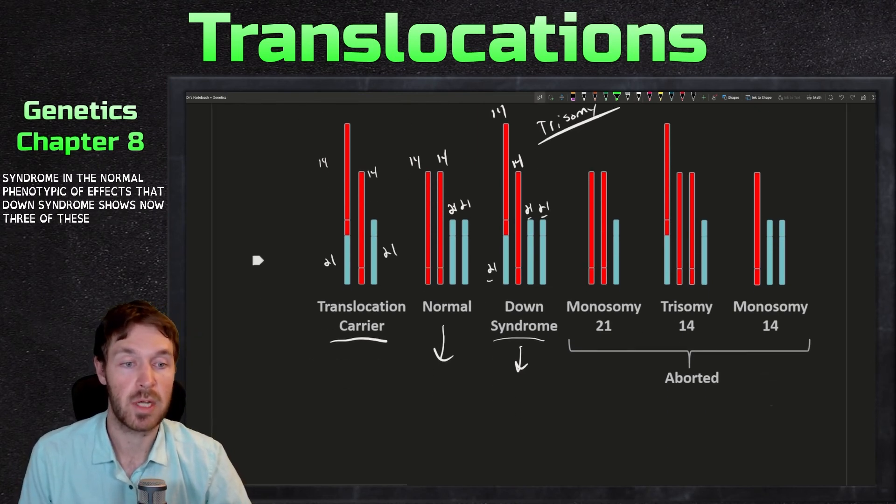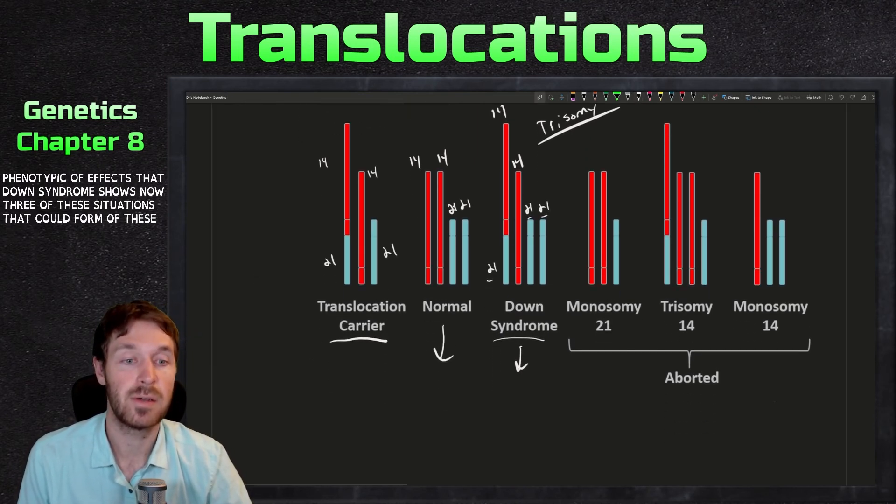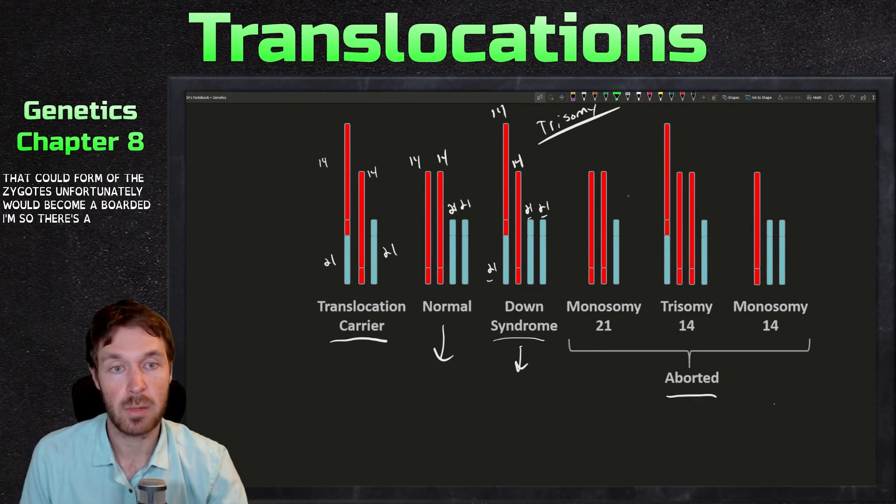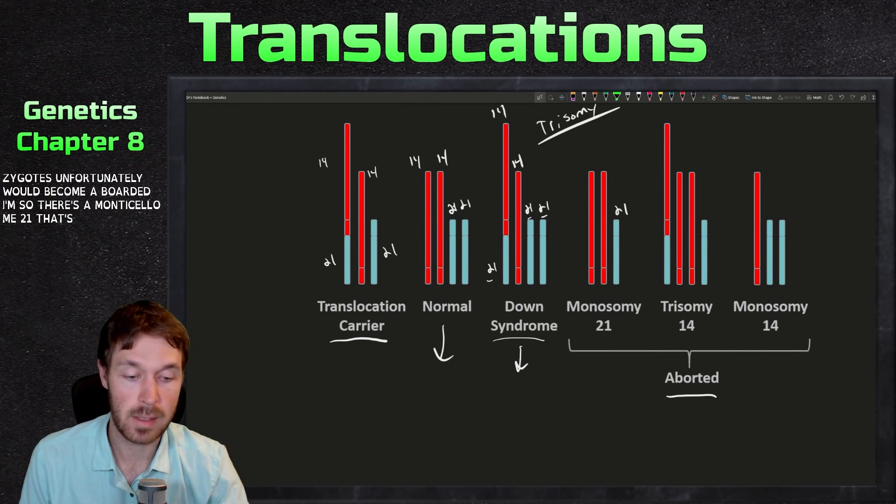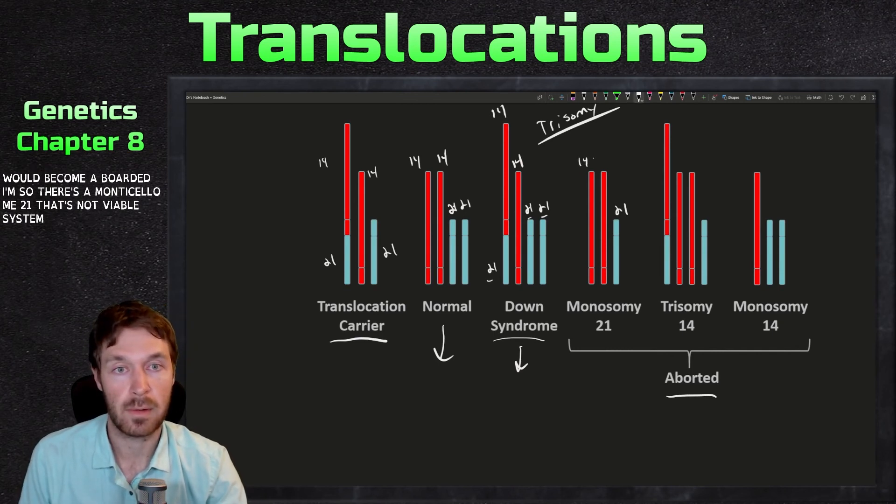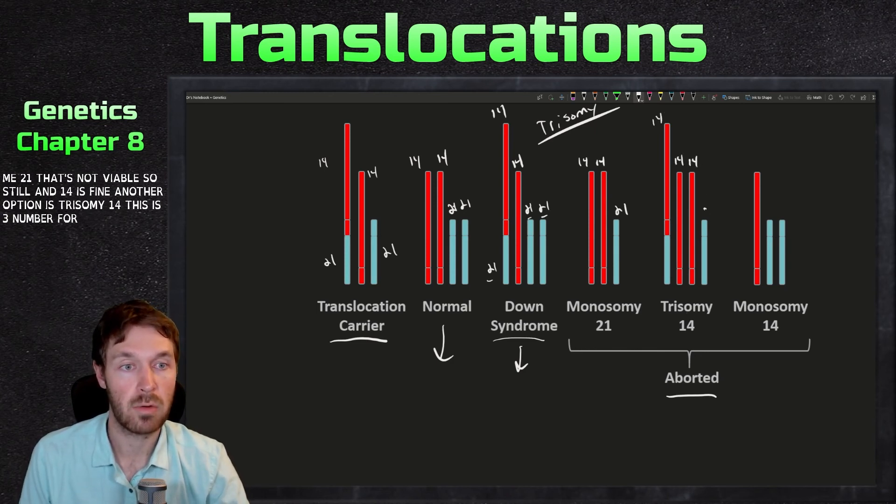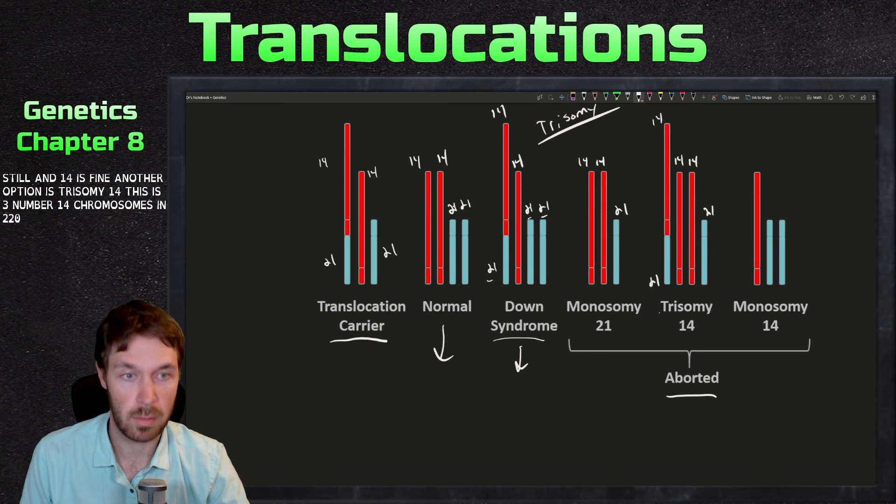Now, three of these situations that could form of these zygotes unfortunately would become aborted. So there's a monosomy 21 that's not viable. So still chromosome 14 is fine. Another option is trisomy 14. This is three number 14 chromosomes and two 21 chromosomes. So unfortunately this child would also end up being aborted.